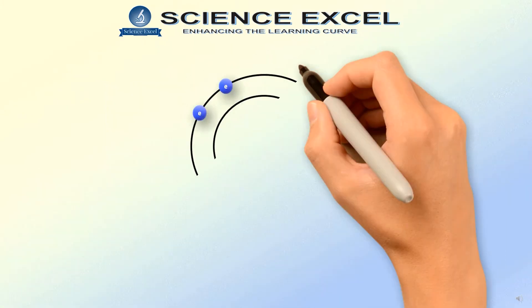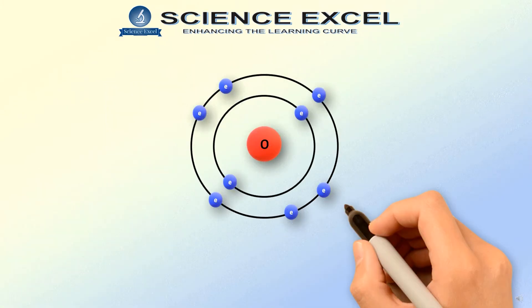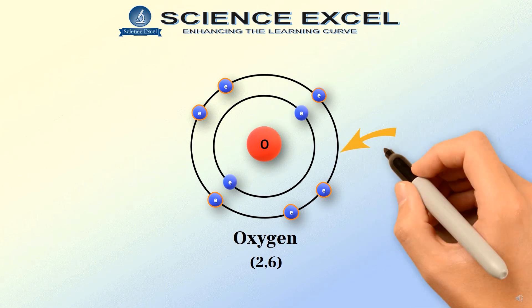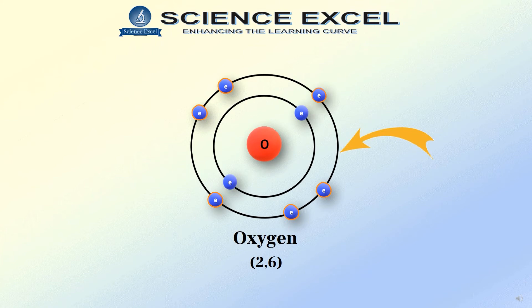Let us take simple examples to understand this concept. Let us find the valency of oxygen. The electronic configuration of oxygen is 2, 6. This means that it has 6 electrons in its outermost shell. So, how many electrons are needed to complete the octet? Yes, you are right if you said 2 electrons. Thus, the valency of oxygen is 2. It accepts 2 electrons from other atoms for completing the octet.